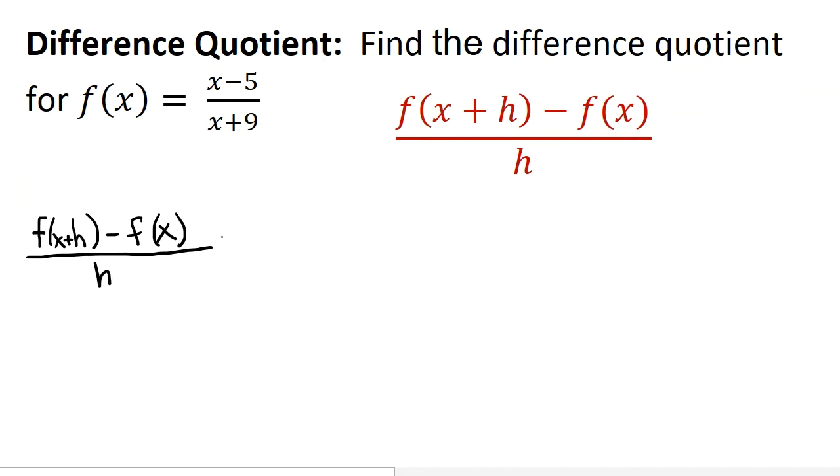Now here it really matters how you write this down, and I think it's very wise to put everything that is f of x plus h in these parentheses. So instead of x, we use x plus h. So for the numerator, it's whatever we put in, x plus h in this case, minus 5, all divided by x plus h plus 9.